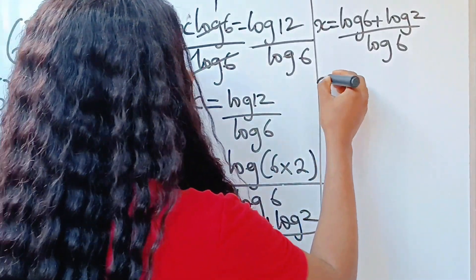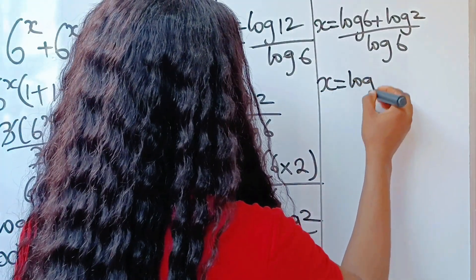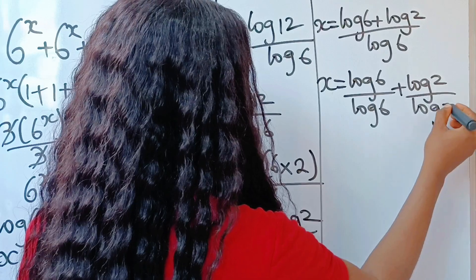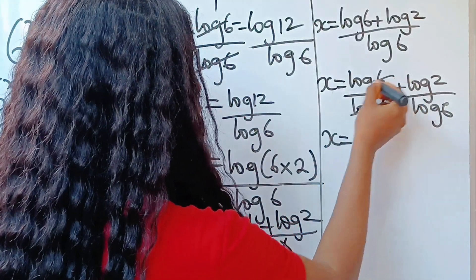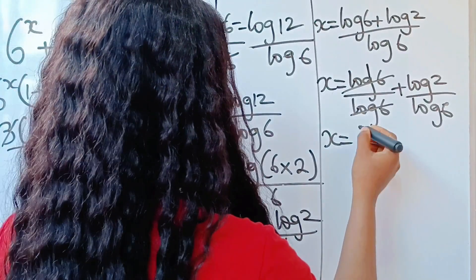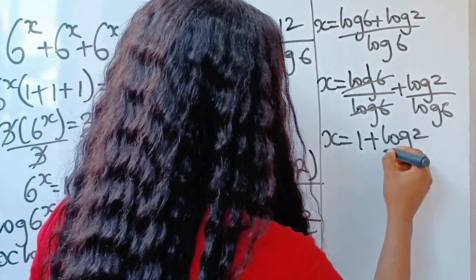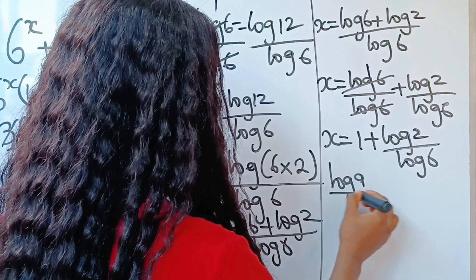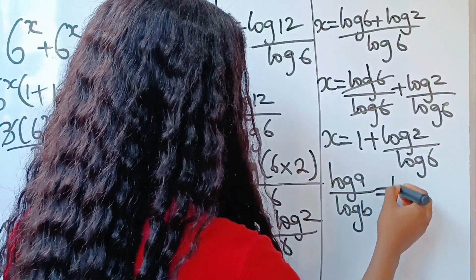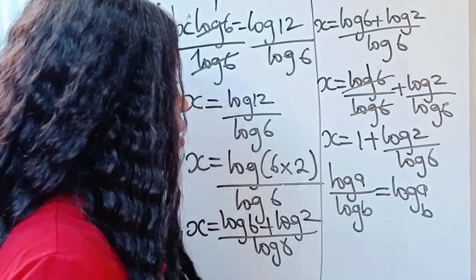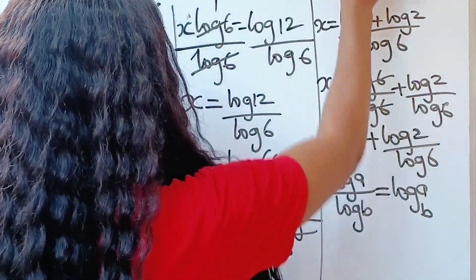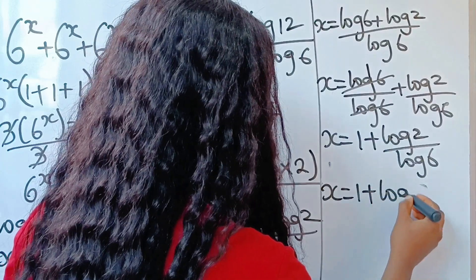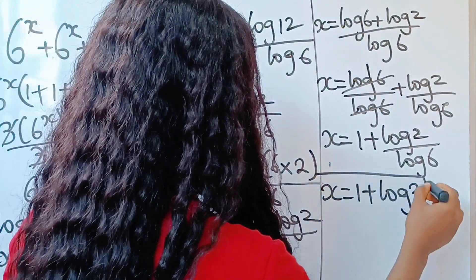So x is equal to log 6 divided by log 6, plus log 2 divided by log 6. Log 6 divided by log 6 gives us 1, so we have x is equal to 1 plus log 2 divided by log 6. But log A divided by log B is equal to log base B of A, so applying that rule, x is equal to 1 plus log base 6 of 2. And this is the value of x.